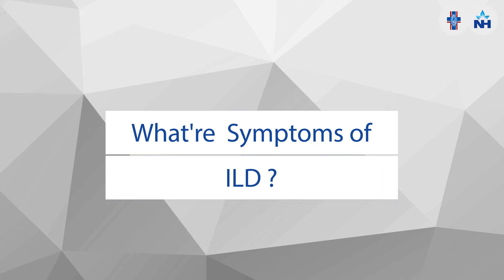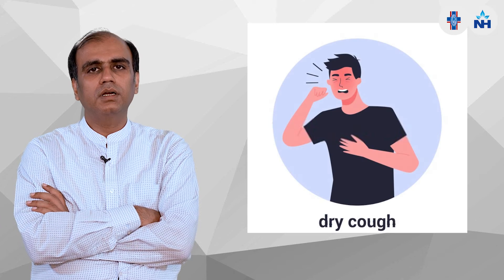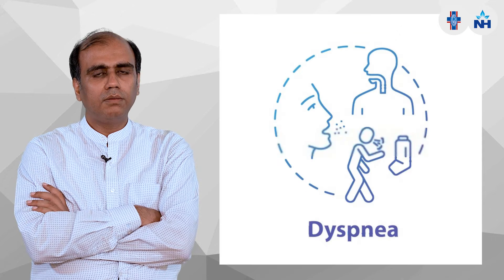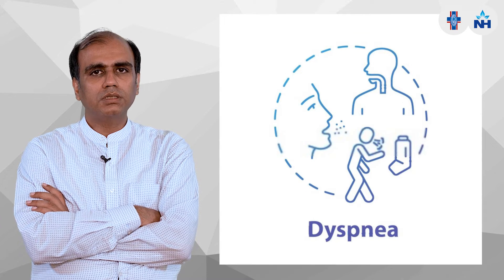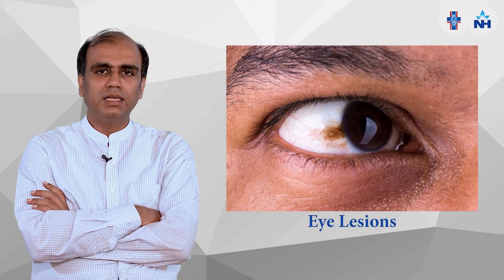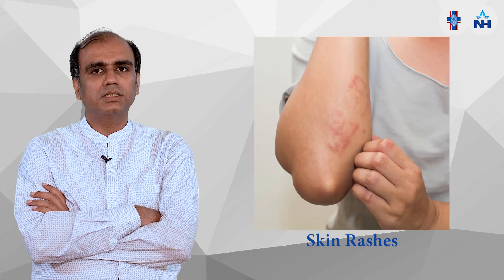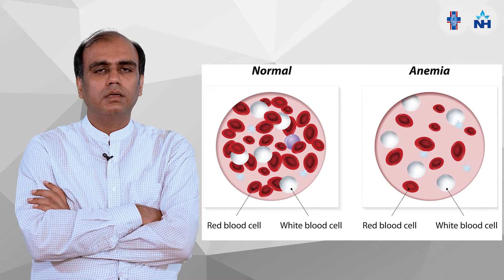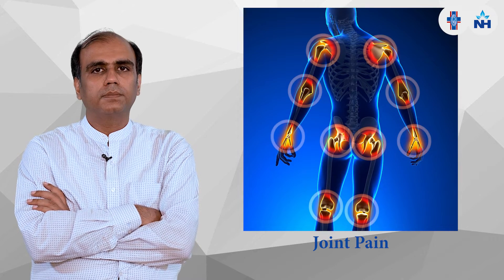Now, what are the symptoms of ILD? Basically, patients come to us in OPD with complaints of dry cough which is barking in nature, and exertional dyspnea — when the patient walks, the patient becomes dyspneic. There are also some systemic symptoms such as eye lesions, skin rashes, baldness, anemia, and joint pain.